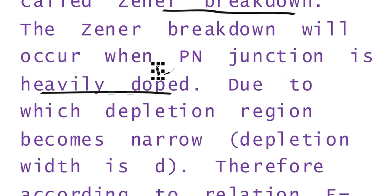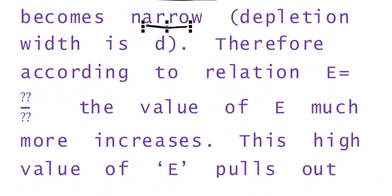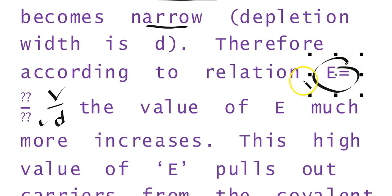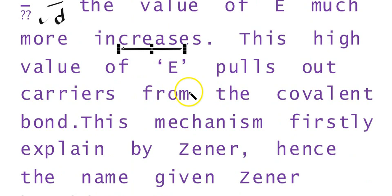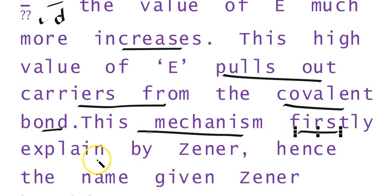Due to heavy doping, the depletion region will be very narrow. If the depletion region is very narrow, then since electric field equals potential over distance, and the distance d is very small, E becomes very high. So a very high value of electric field pulls out the carriers from the covalent bonds. This mechanism was first explained by the scientist Zener. Hence, it is given the name Zener breakdown.